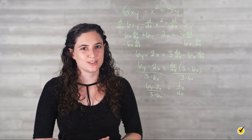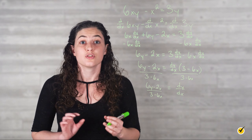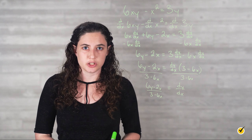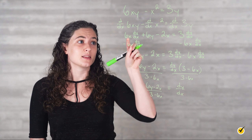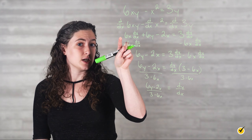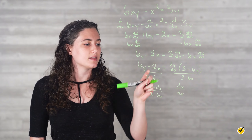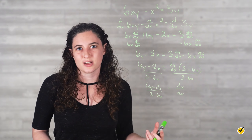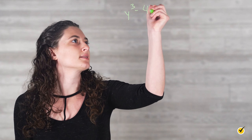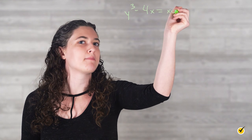And just like that, we have the solution. The three steps of implicit differentiation are: writing d over dx in front of each term, taking the derivative of each term with respect to x, and then solving for dy over dx. Let's try this with another example: use implicit differentiation to find dy over dx for the relation y cubed minus 4x is equal to xy.